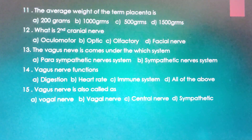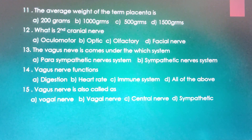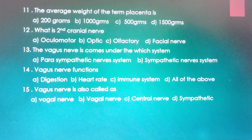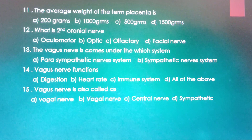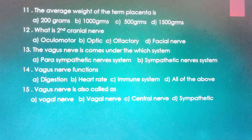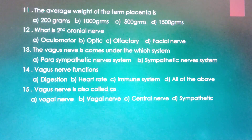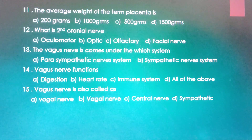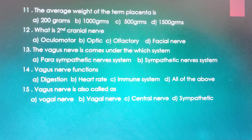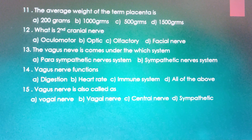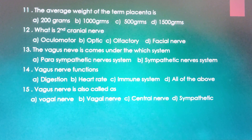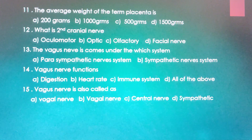The vagus nerve is also called: ogle nerve, vagal nerve, central nerve, or sympathetic nerve. The correct answer is vagal nerve. This is another name for the vagus nerve — vagus nerve and vagal nerve are the same.